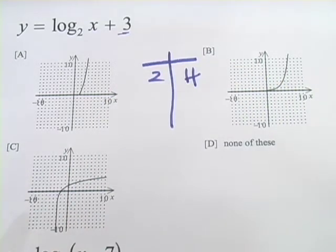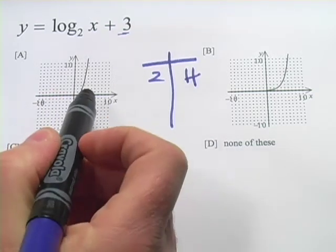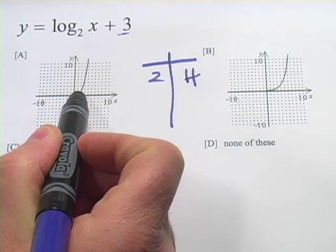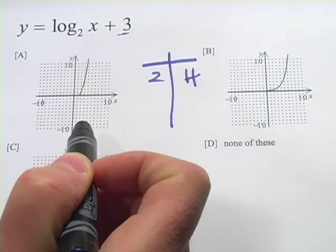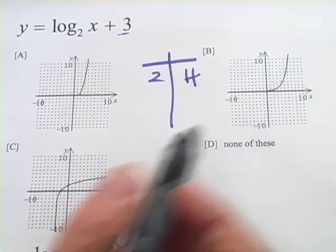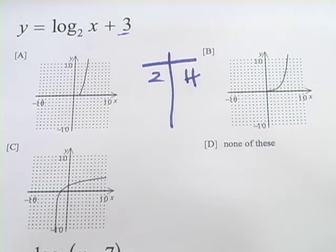And let's see, do we have that anywhere? Well, it looks like 2, 4 is not on any of these graphs. That's not looking promising.